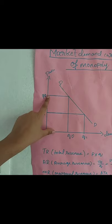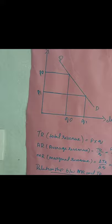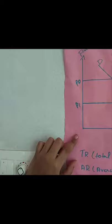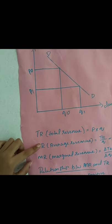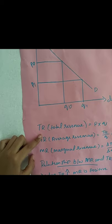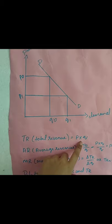Total revenue is the total amount of revenue earned by a firm by selling output in the market. TR is calculated by multiplying the quantity of output by price. Therefore, TR is equal to P multiplied by Q.